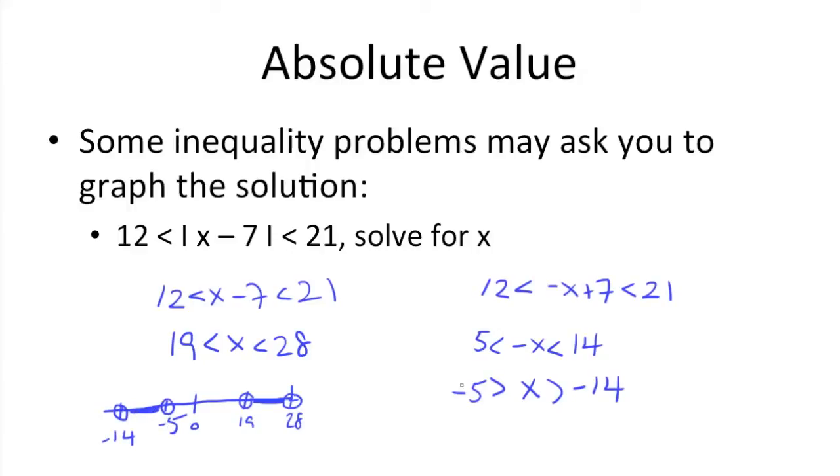Now, if you want to check if these answers are correct, just choose a number in between these inequalities and plug them in to see if they work. So, let's say 20, x is equal to 20. 20 minus 7 is 13, which is in between 12 and 21. And over here, we have negative 5 and negative 14, so let's say negative 10. Negative 10 minus 7 is negative 17. Absolute values get rid of the negative, and we have 12 is less than 17 and is less than 21. And that works.